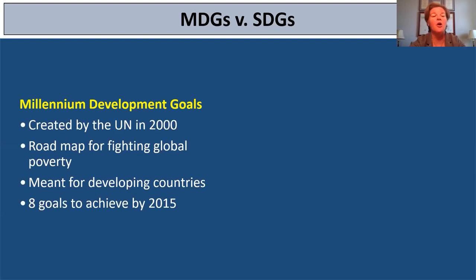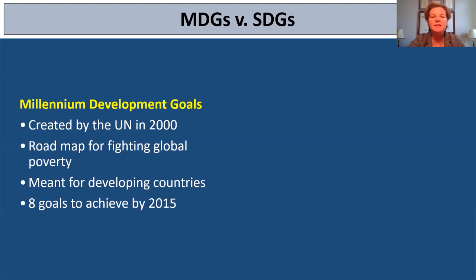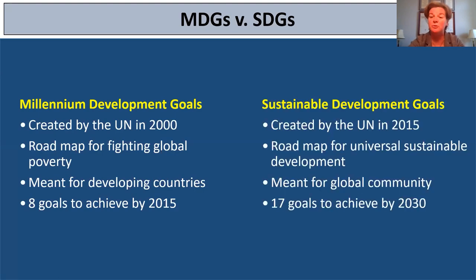The MDGs — the Millennium Development Goals — all came out of the desire for more analytically useful data to describe different areas of development. The MDGs were created by the United Nations in the year 2000, as a sort of roadmap for fighting global poverty. It's important to understand that these development goals were really meant for developing countries — you have the helpers versus the ones who needed help. The United Nations came up with eight goals to try to achieve in a 15-year span, from 2000 to 2015, and these were then superseded by the SDGs, the Sustainable Development Goals.